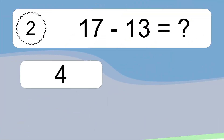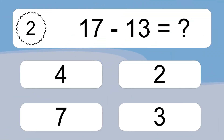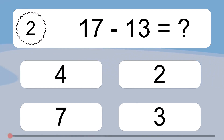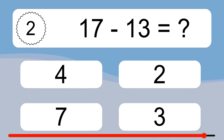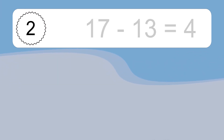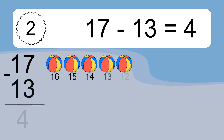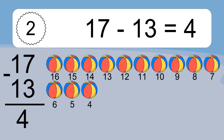17 minus 13 equals what? 17 minus 13 equals 4. Let's count it! 16, 15, 14, 13.